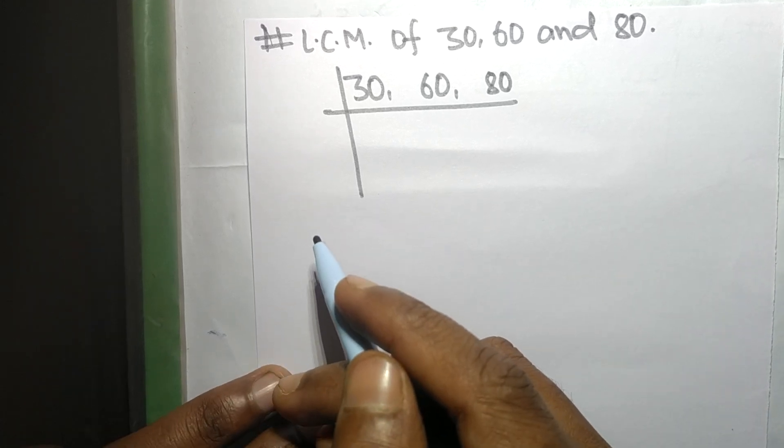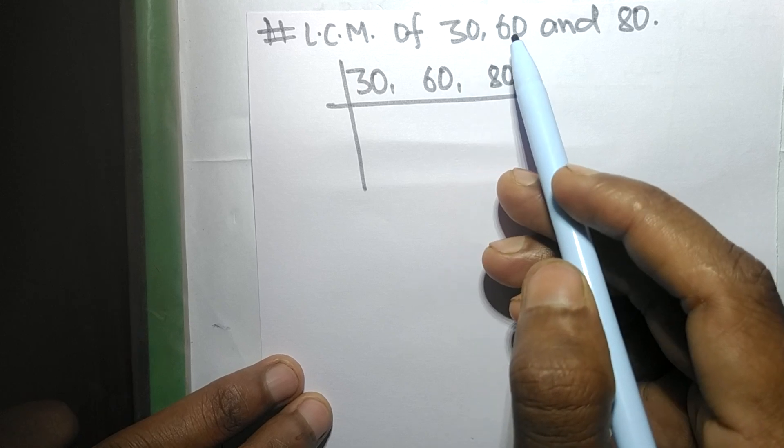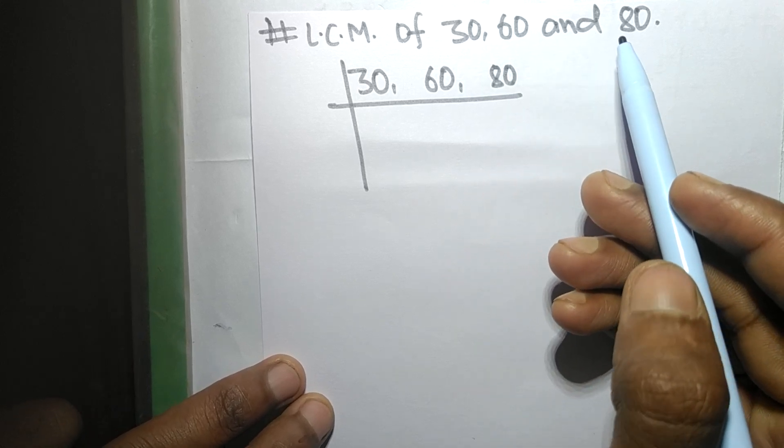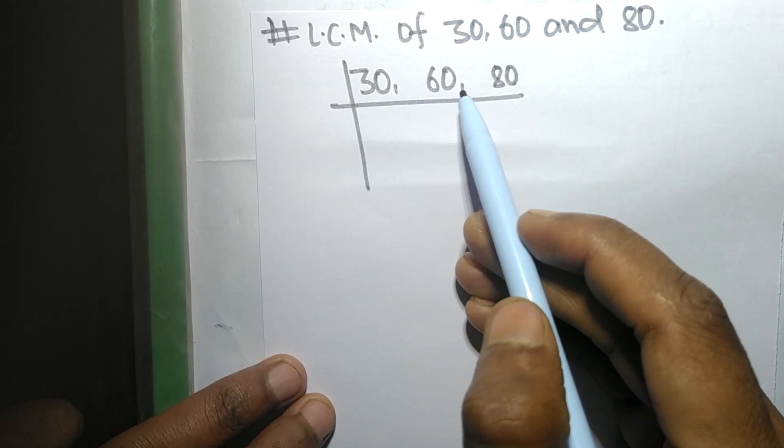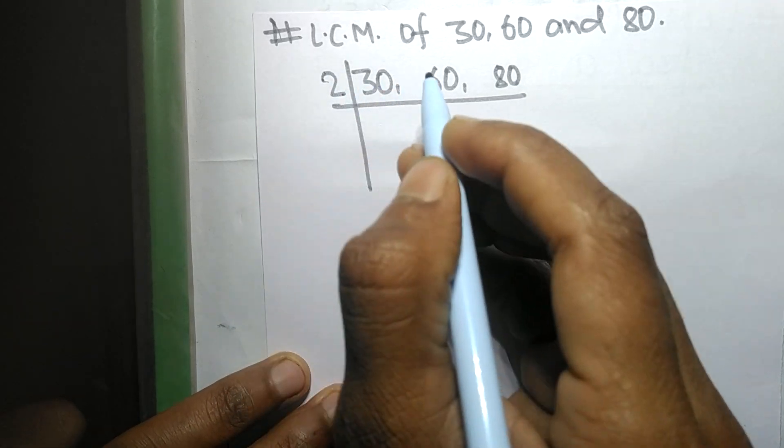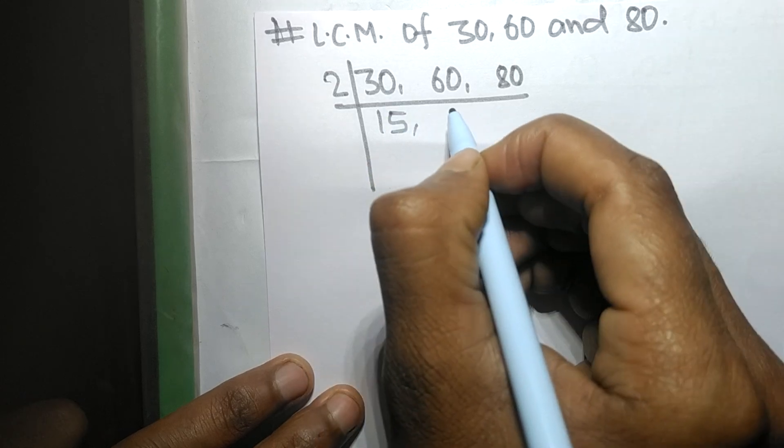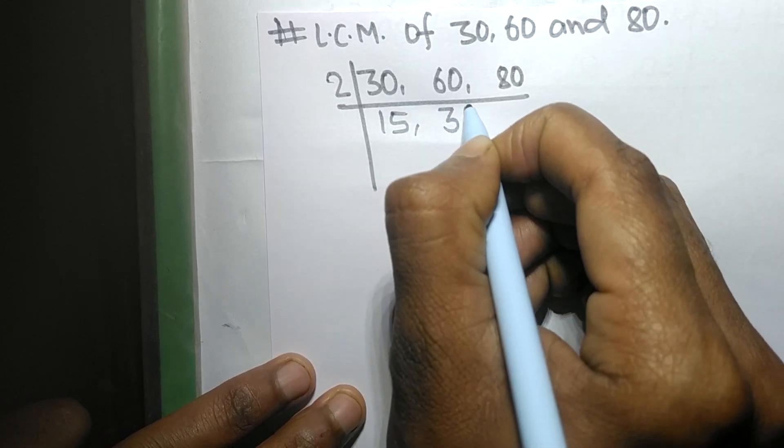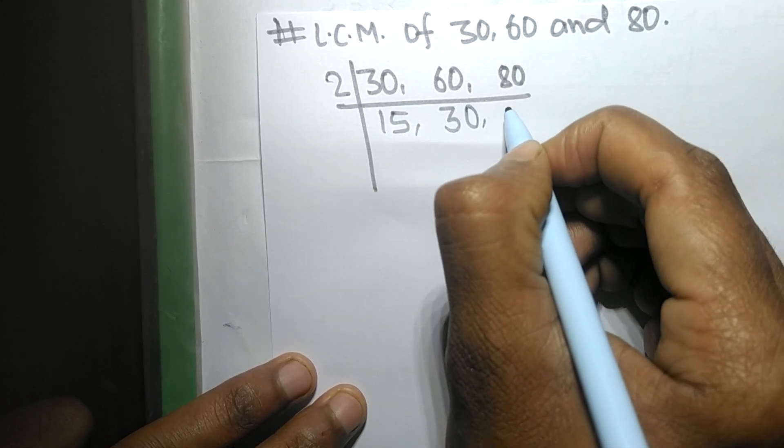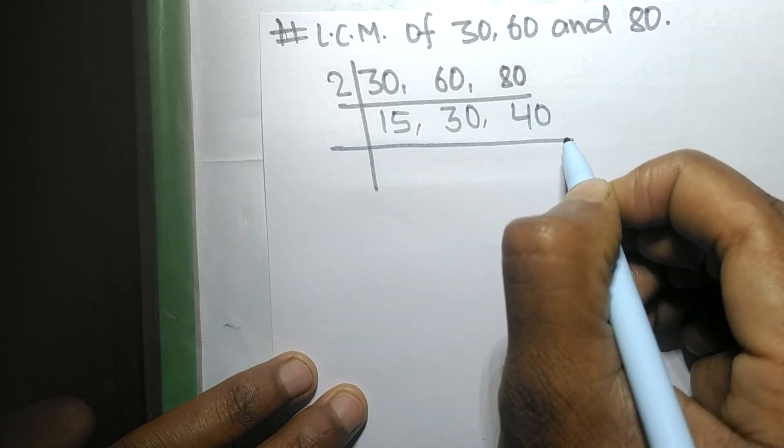So today in this video we shall find LCM of 30, 60, and 80. These all numbers are exactly divisible by 2, so 2 times 15 mean 30, 2 times 30 mean 60, 2 times 40 mean 80.